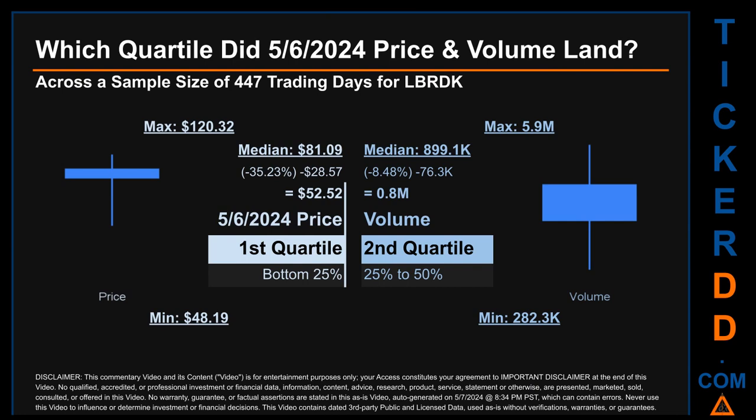The day's volume landed within the second quartile — that is, within the 25% to 50% range of all sampled daily volume — which saw a max daily volume of 5.9 million and a minimum of 282,300. Quartiles tell us about the spread of a data set by breaking it into quarters, just like how the median breaks the set into half. LBRDK has a median price of $81.09. Therefore, the 6th of May 2024 price was lower from that middle marker by 35.23%. The day's volume of 0.8 million was less than the median by 8.48%.